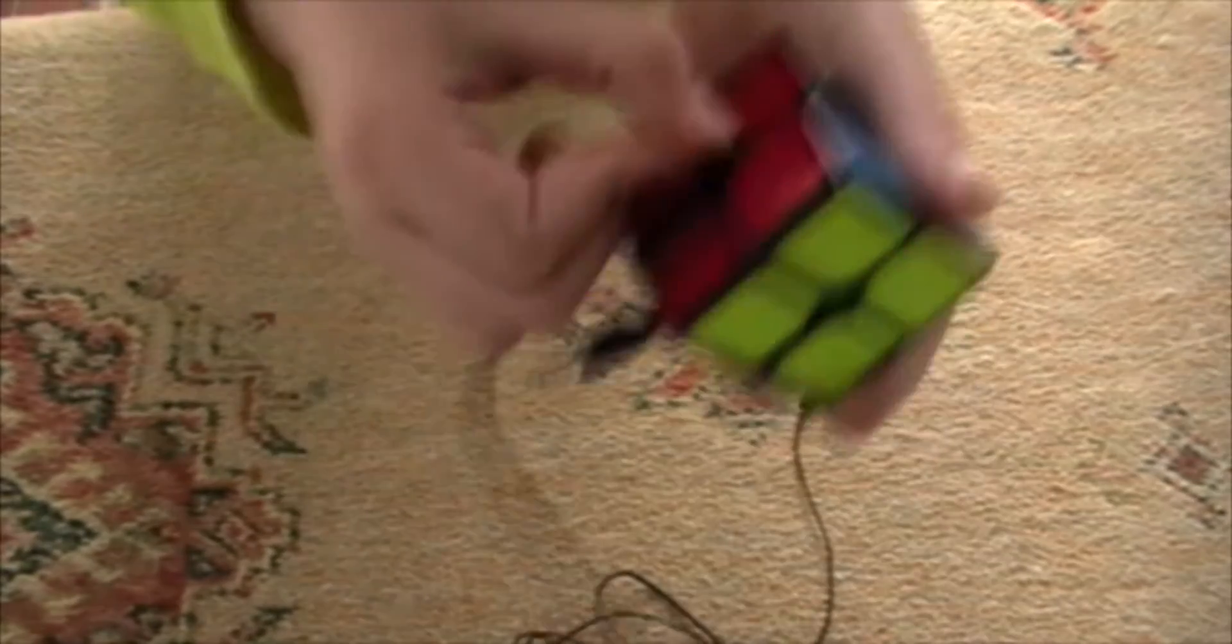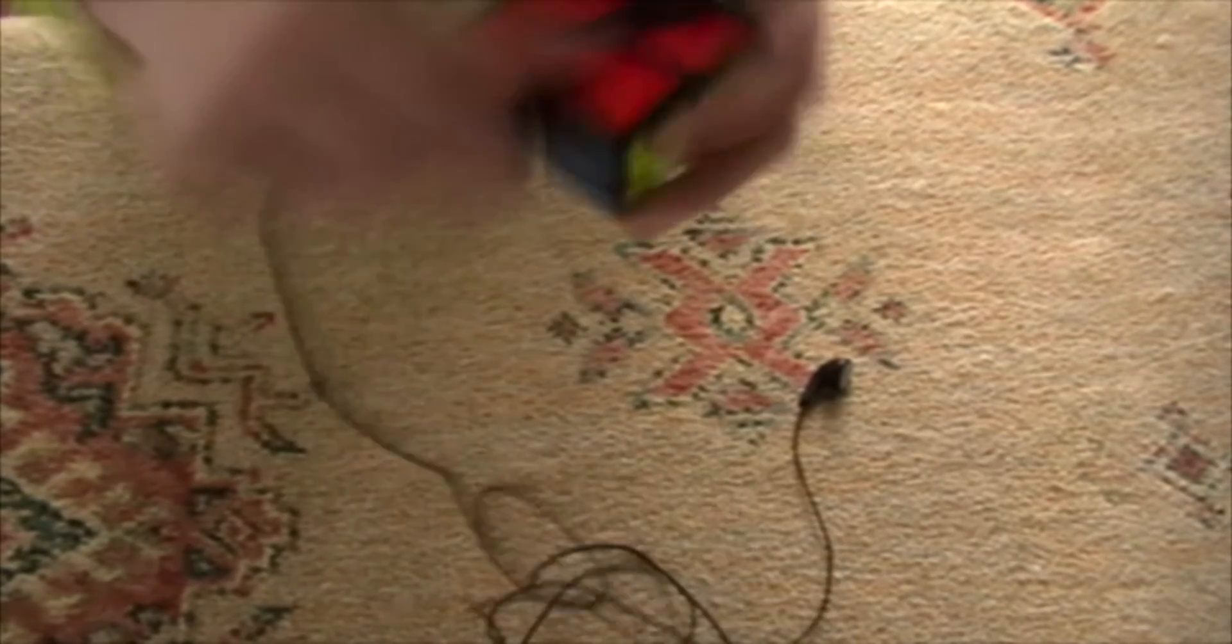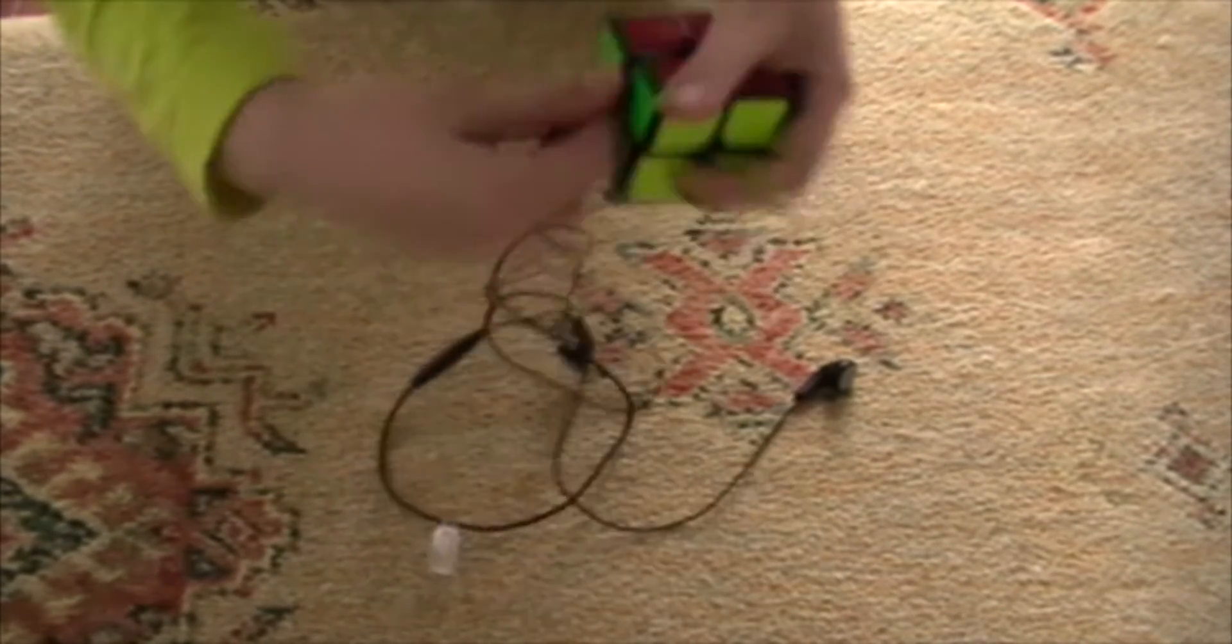Secondly, you need to tuck the first part of the wire into the cube as shown here and start to wrap it around until you get to the end, which you tuck underneath the part of the other wire.